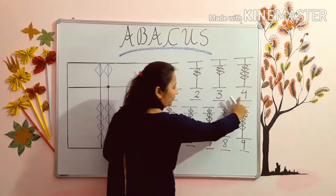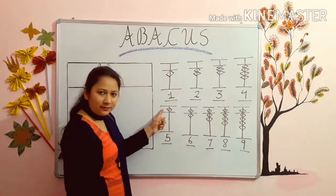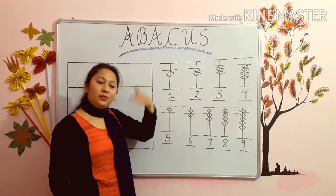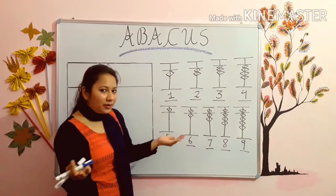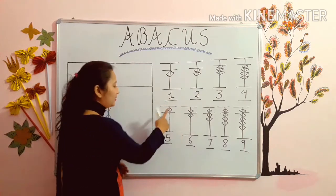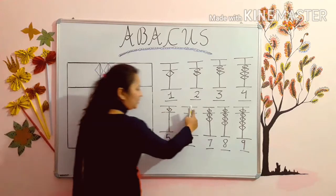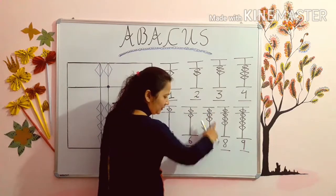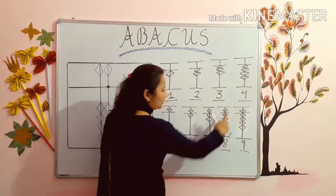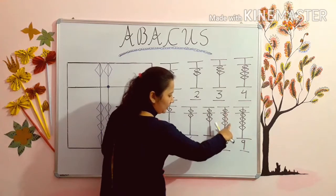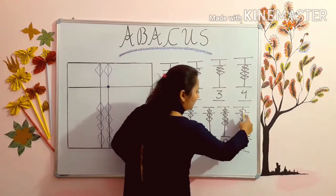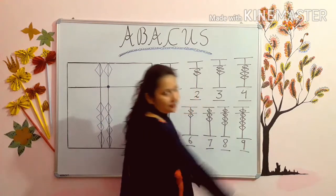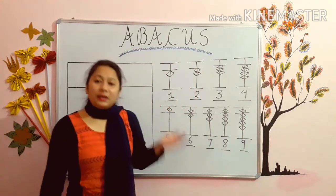This bead 1, 2, 3, 4. This bead 5 — it goes above the line. This bead 5, 6. This bead 5, 6, 7. This bead 5, 6, 7, 8. This bead 5, 6, 7, 8, 9. Here which is last.